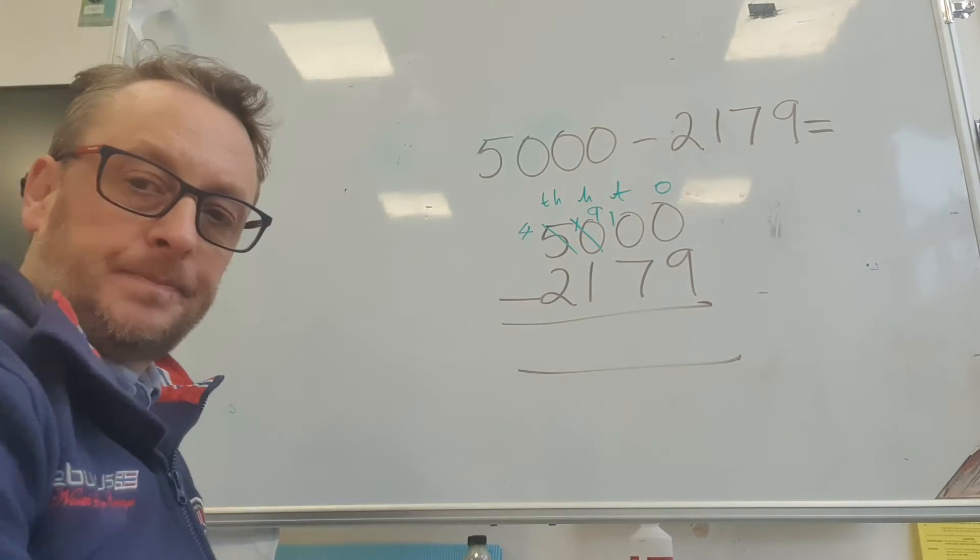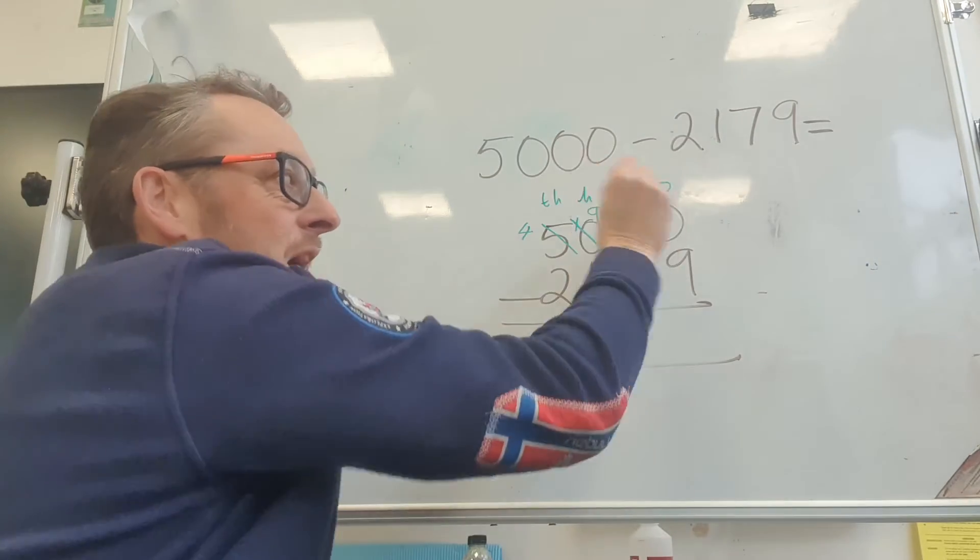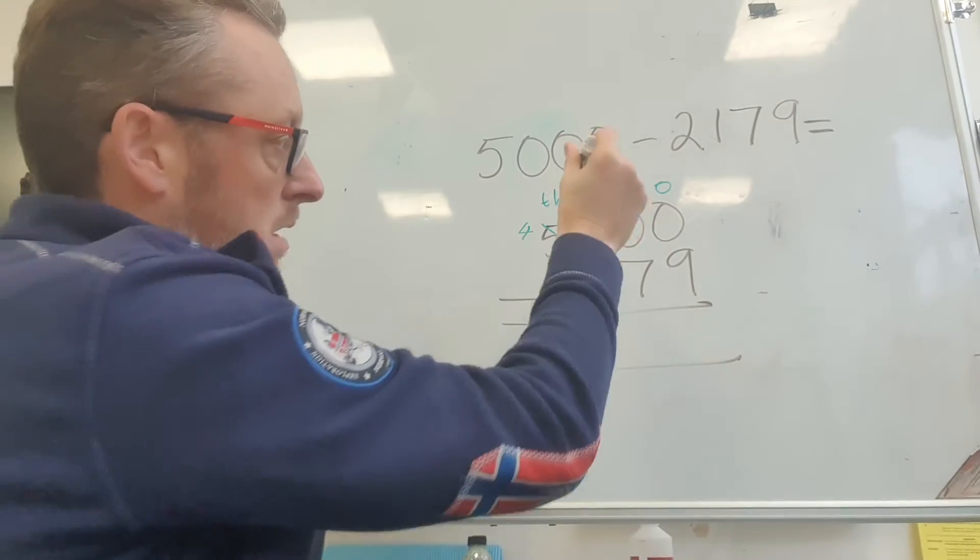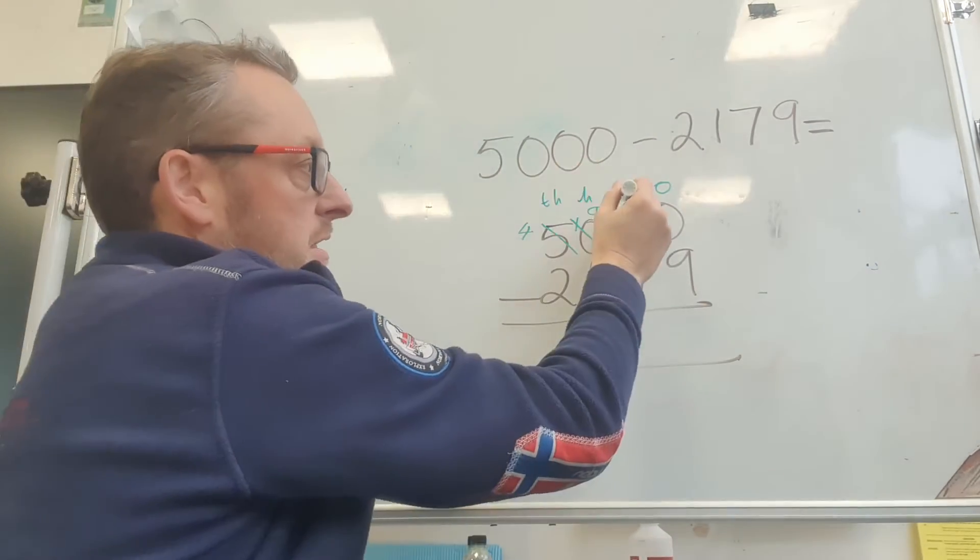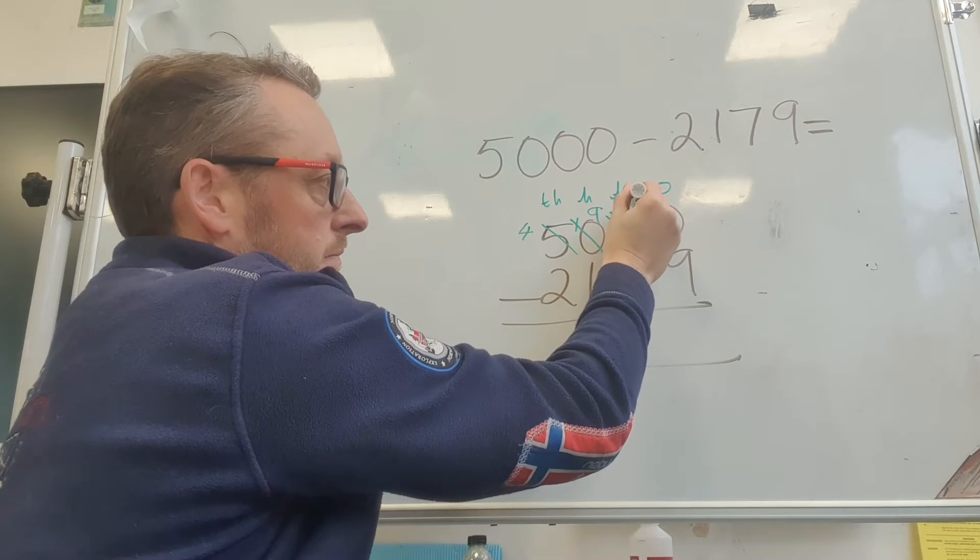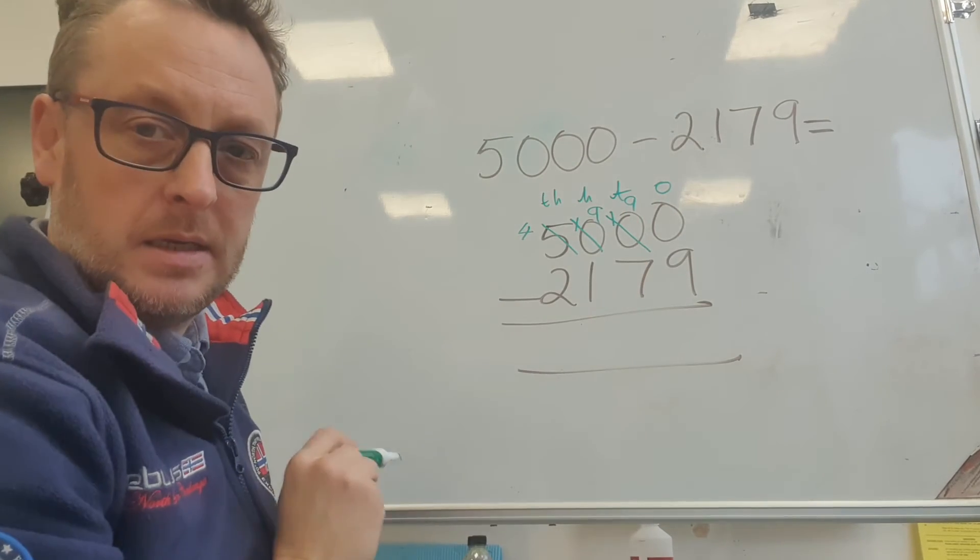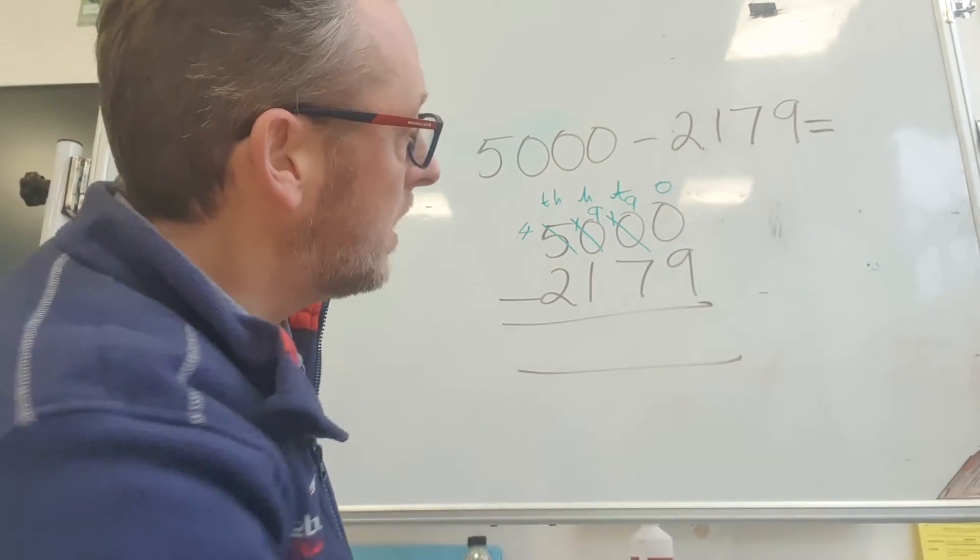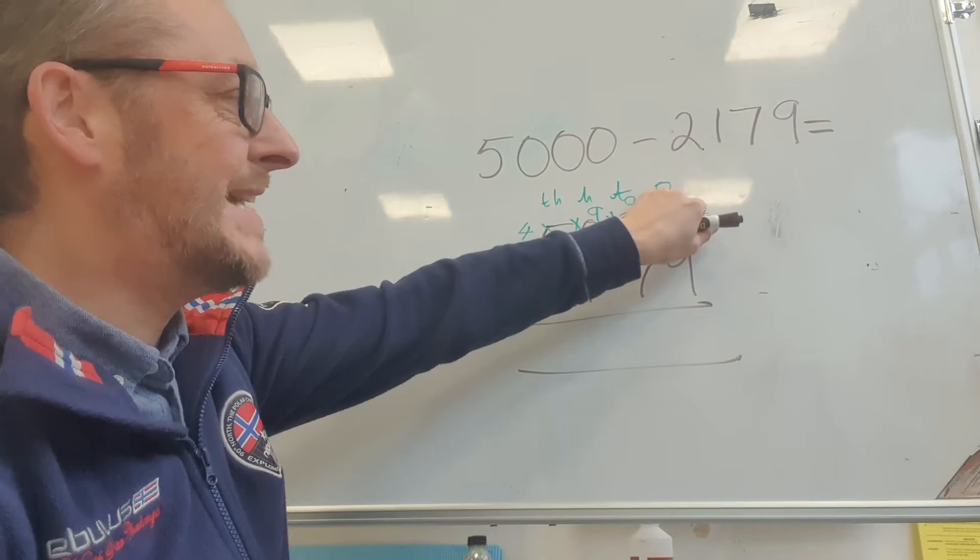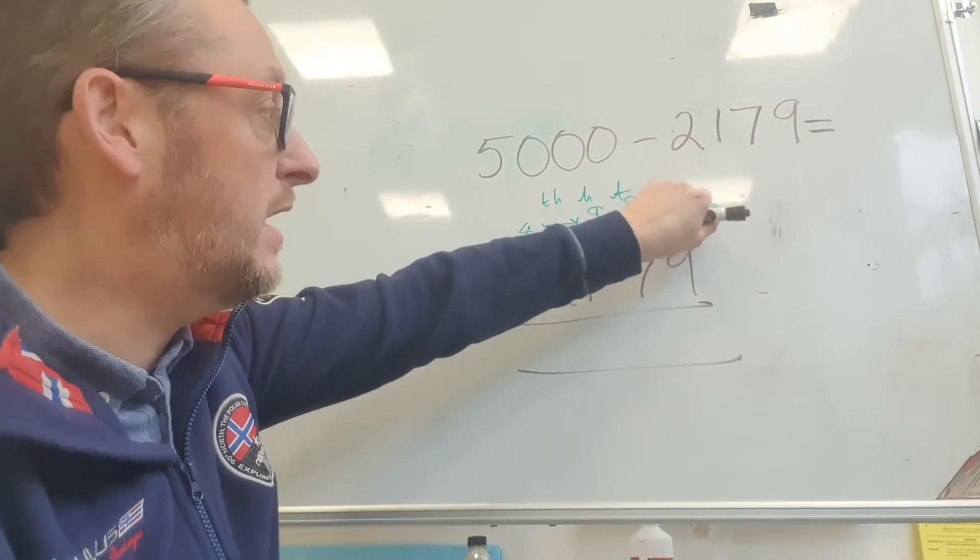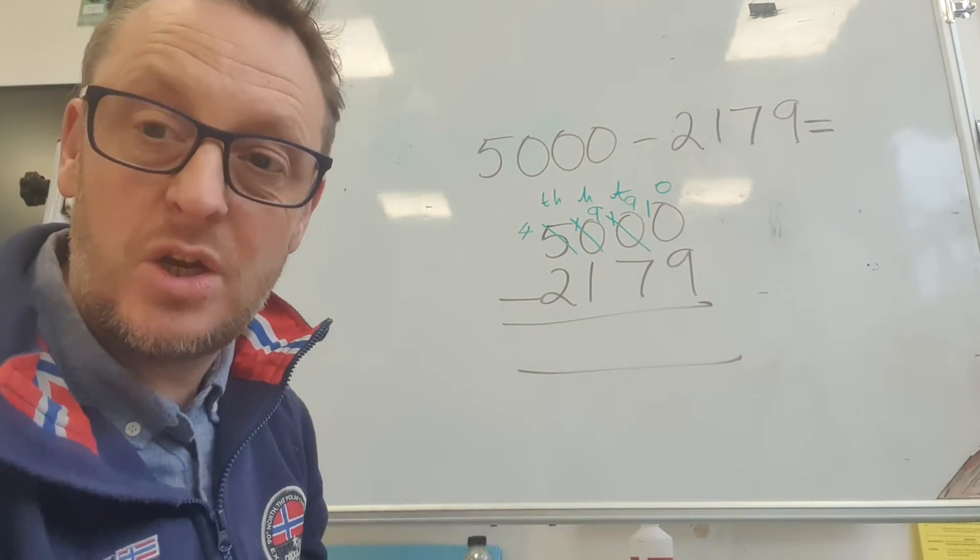I've got ten hundreds, but I still need to get over to my ones. I'm going to change my ten tens, take one ten off, and that makes nine. Ten takeaway one is nine. And now I'm putting my ten in here, so I've got ten ones.